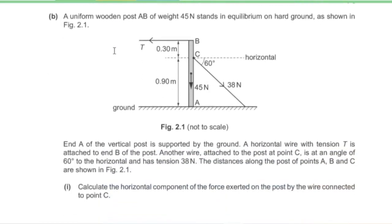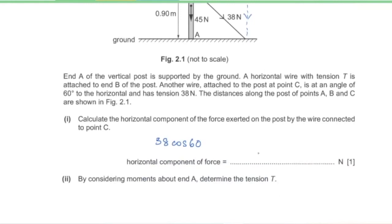Part B. A uniform wooden post AB of weight 45 newtons stands in equilibrium on hard ground. A horizontal wire with tension T is attached to end B, and a wire at point C is at 60 degrees to the horizontal with tension 38 newtons. Part 1: The horizontal component of the force at C is 38 cos 60 = 19 newtons.